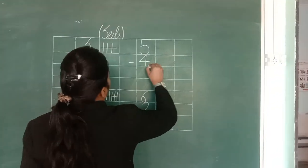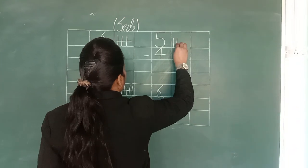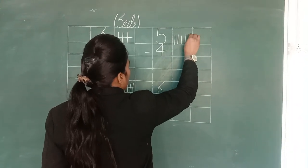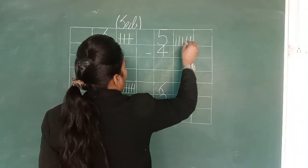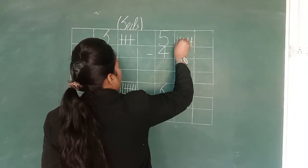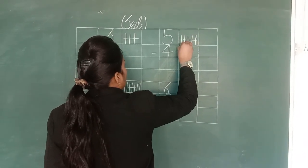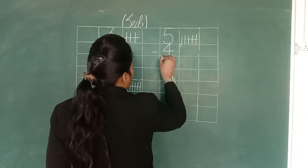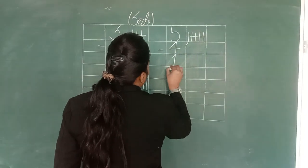Next sum is 5 minus 4. Draw lines: 1, 2, 3, 4, 5. Cut 4: 1, 2, 3, 4. Left over is 1. Write down 1. So 5 minus 4, answer is 1.